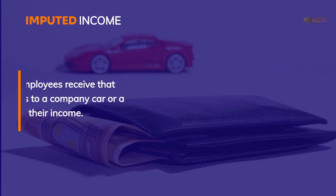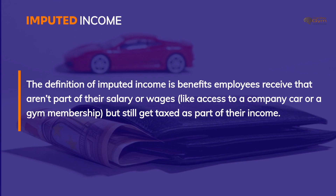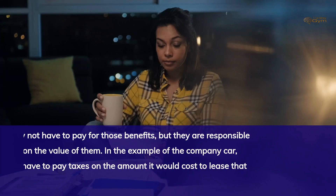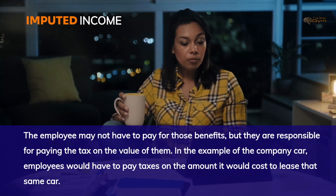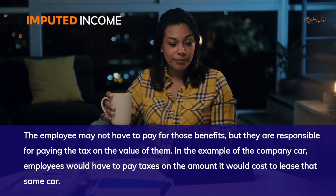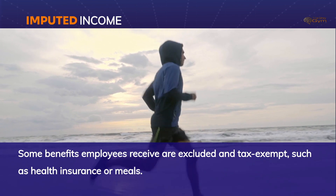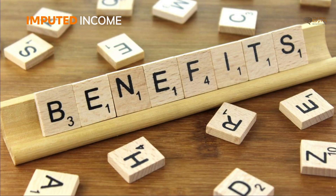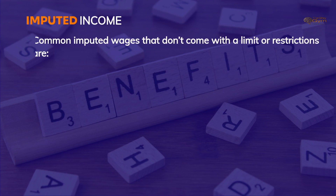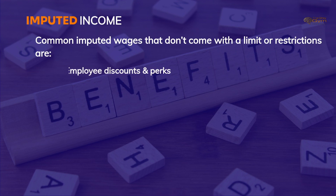What is imputed income? The definition of imputed income is benefits employees receive that aren't part of their salary or wages — like access to a company car or a gym membership — but still get taxed as part of their income. The employee may not have to pay for those benefits, but they are responsible for paying the tax on the value of them. In the example of the company car, employees would have to pay taxes on the amount it would cost to lease that same car. Some benefits are excluded and tax-exempt, such as health insurance or meals. Common imputed wages with no limits include employee discounts and perks from partner companies.